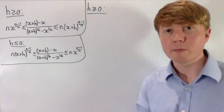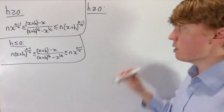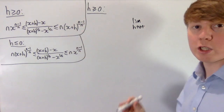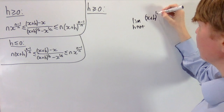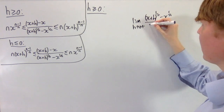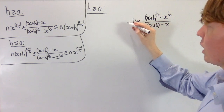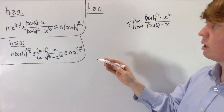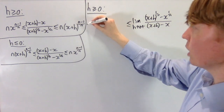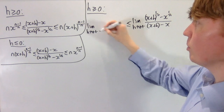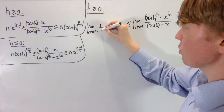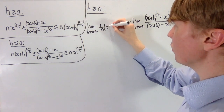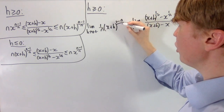First we go back to the case where h is positive to find the right derivative. We're interested in the limit as h tends to 0 from above of x plus h to the 1 over n minus x to the 1 over n, all over x plus h minus x, which is of course just h in the denominator. Previously we had an upper bound, but because we're taking reciprocals of everything, this upper bound's reciprocal is going to become our lower bound. So our new lower bound is the limit as h tends to 0 from above of 1 over n times x plus h to the power of 1 minus n over n.